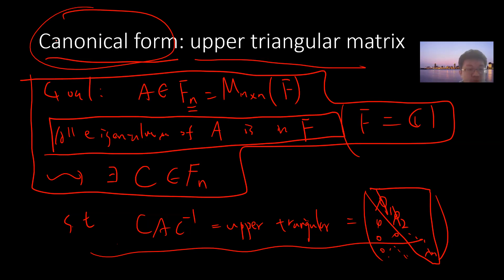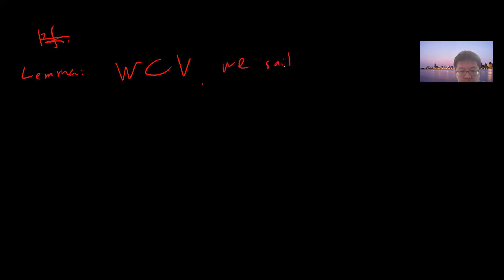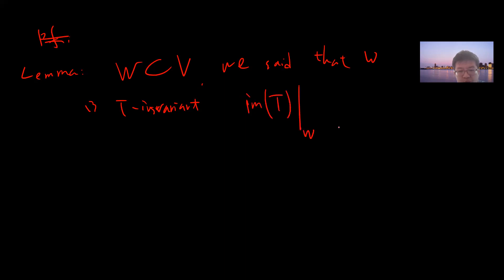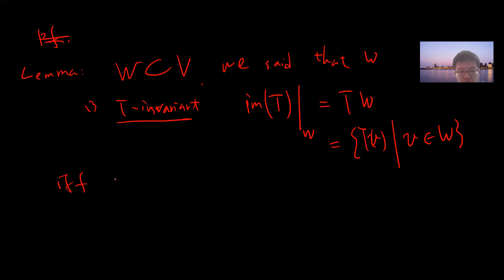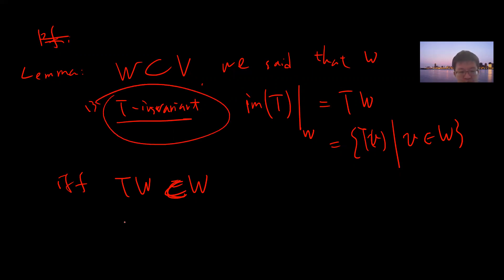The proof is a bit lengthy, so we start with some lemmas. Recall subspaces: if W is a subspace of V, we say W is T-invariant if T(W) is a subset of W — meaning if you apply T to any vector in W, the result stays in W. In particular, if T has an inverse and T(W) equals W, that is also invariant.